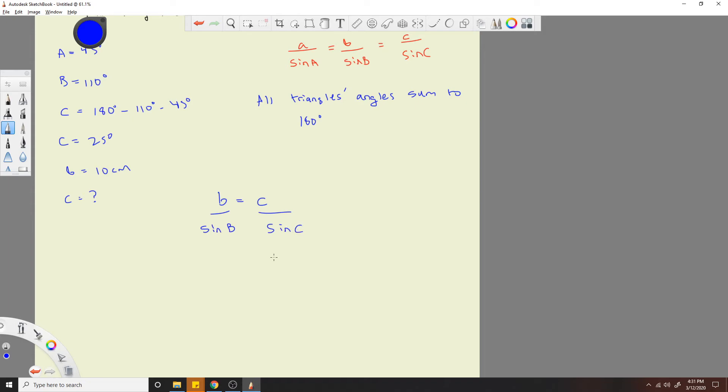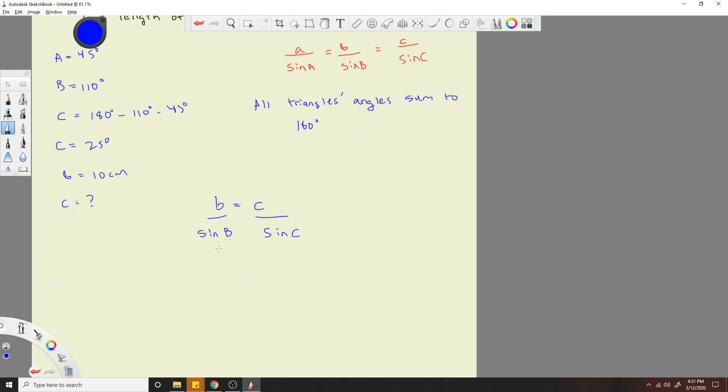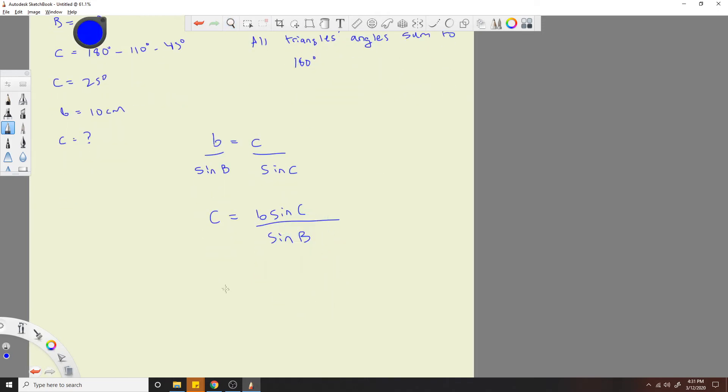So C is equal to little B sine of C over sine of B. And we plug in everything.